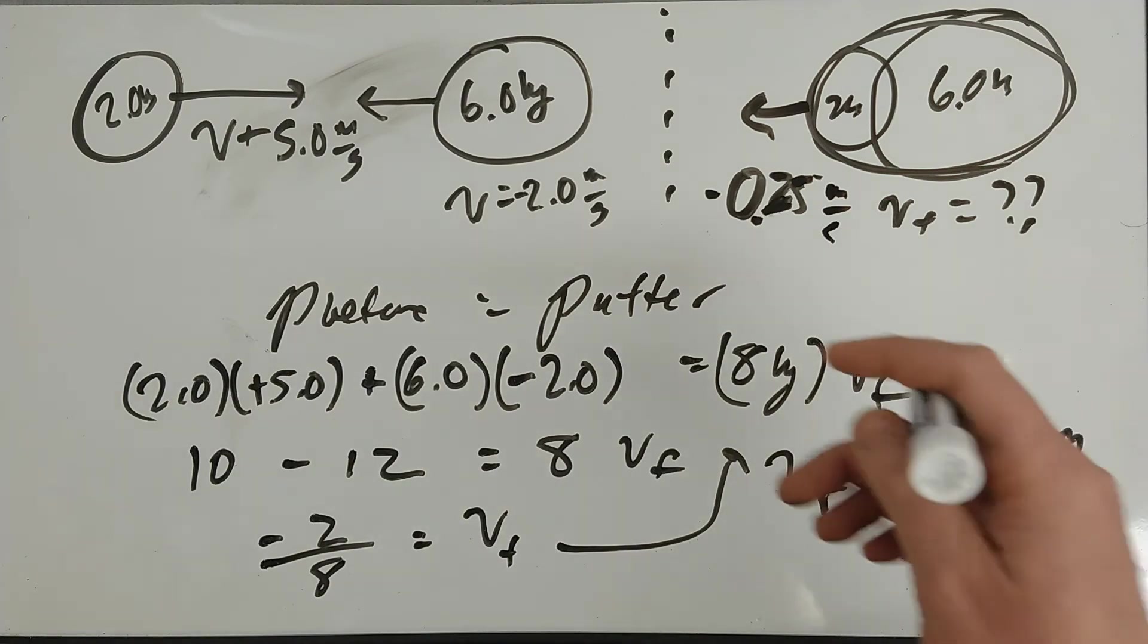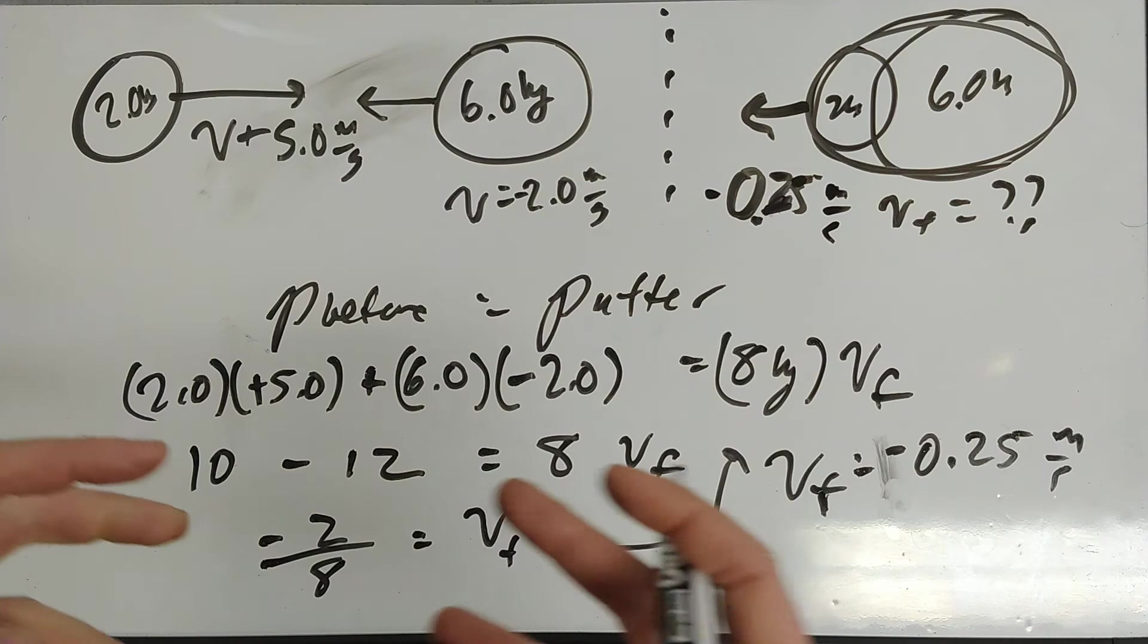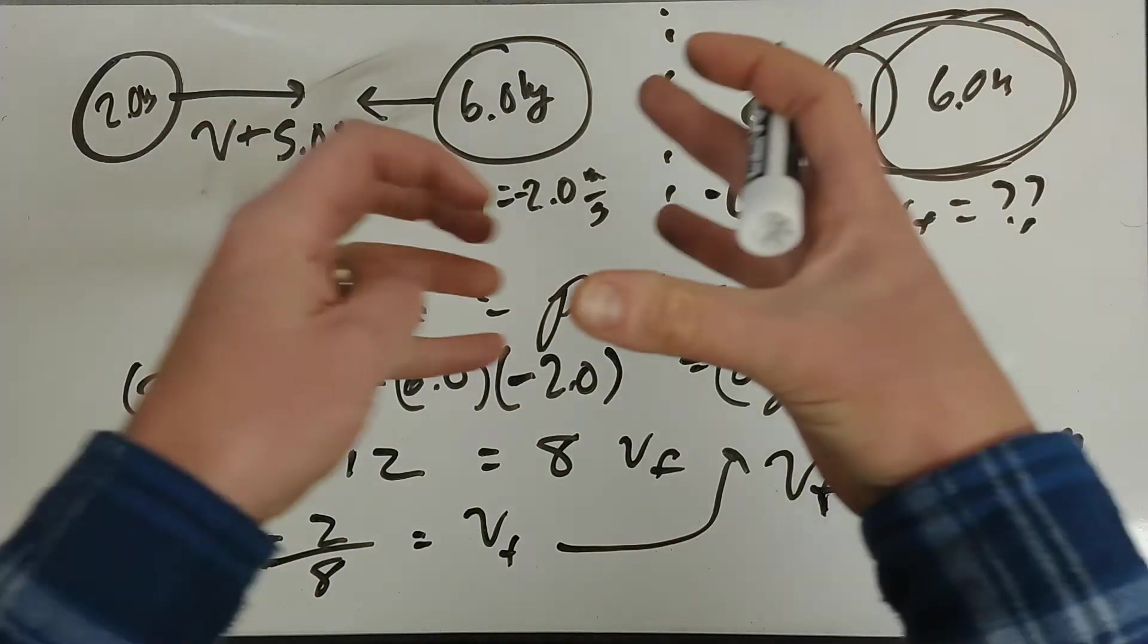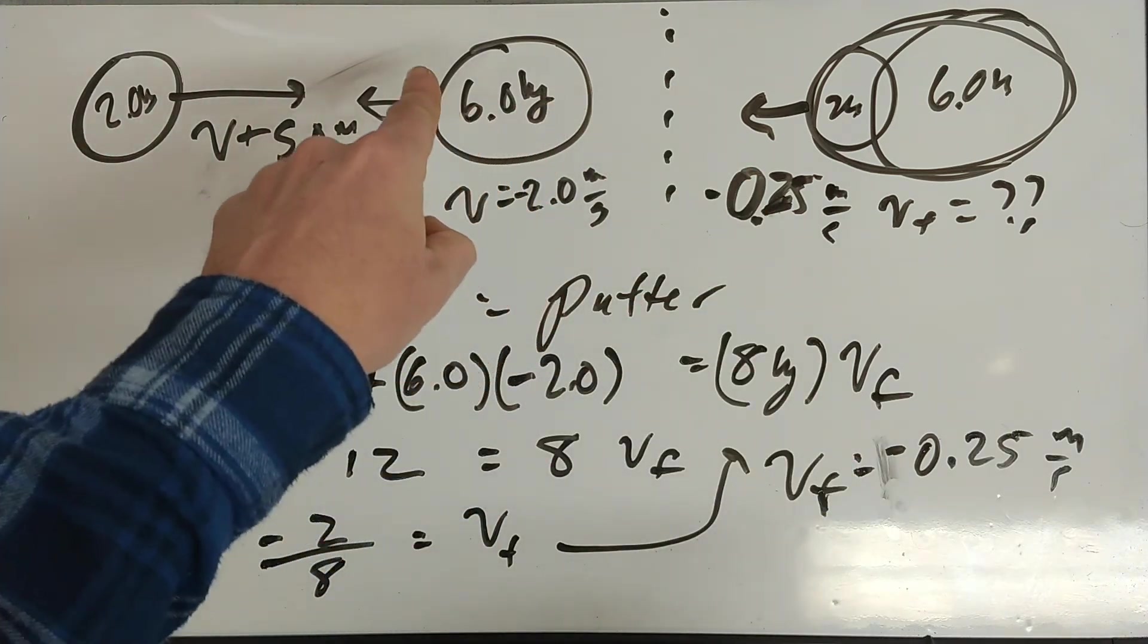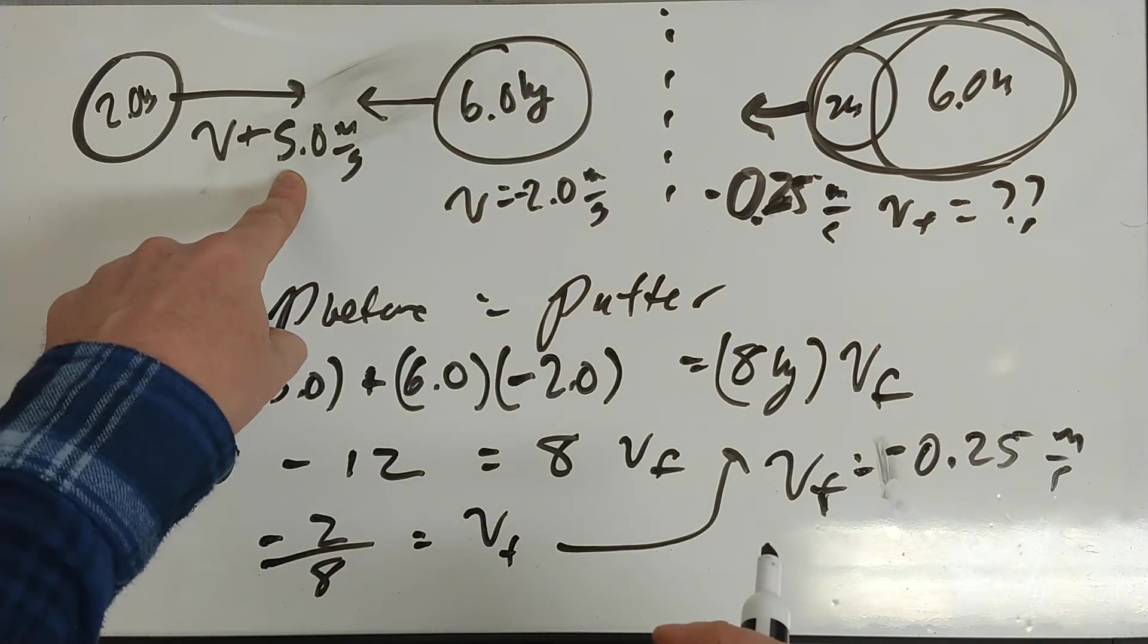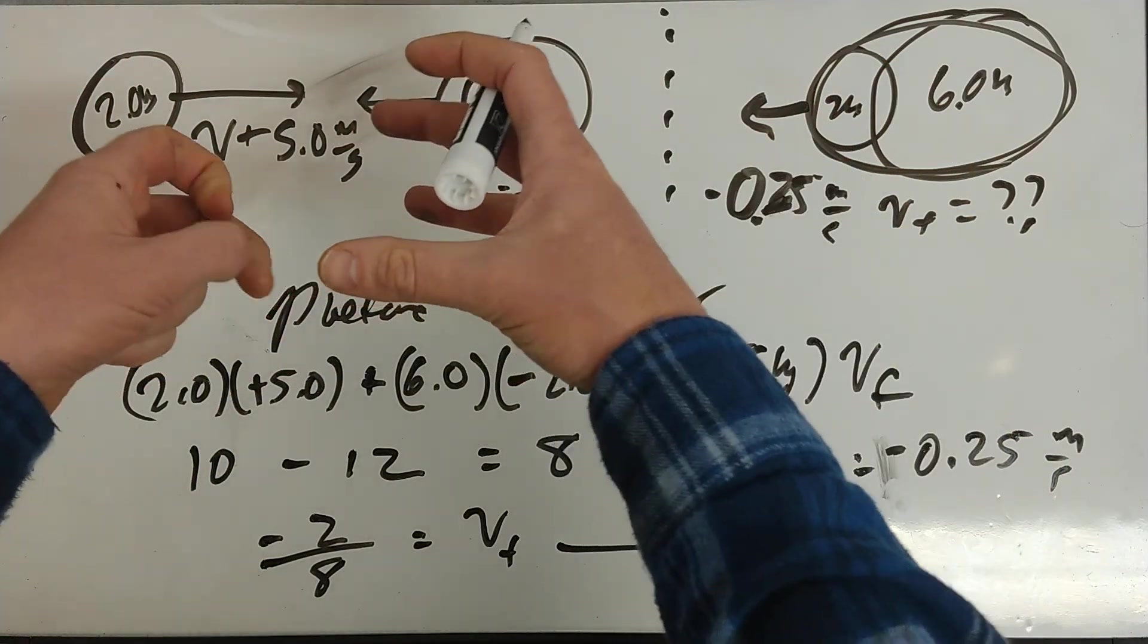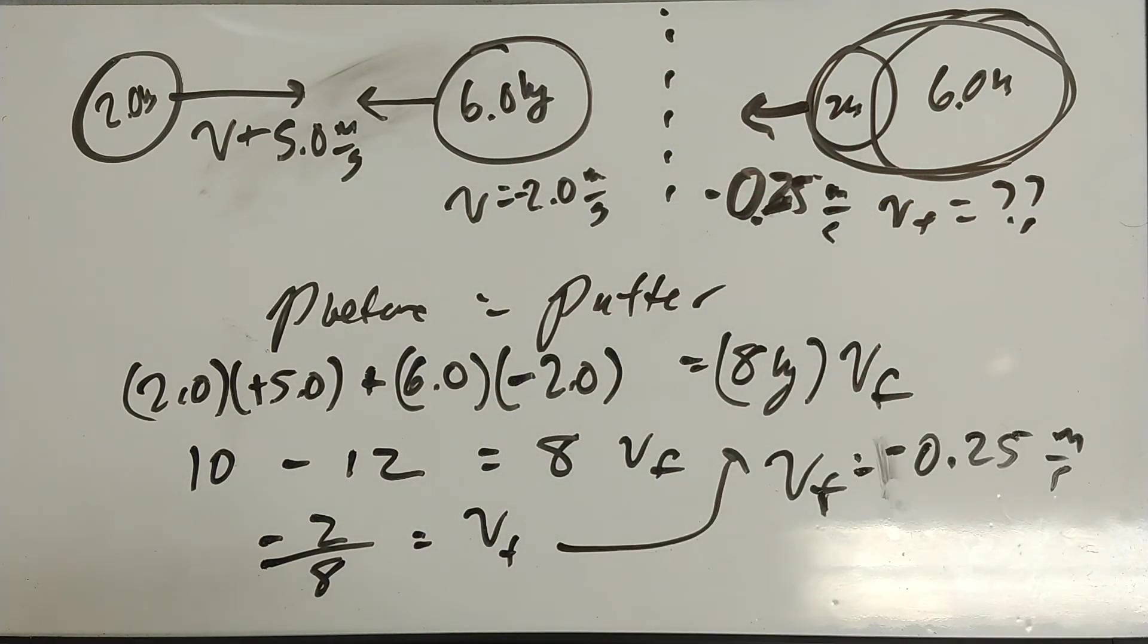There would be a velocity combination in which they would stick together and stop, which is pretty cool. Basically if their incoming momentums are the same—this one's momentum is 12, this one is 10—if I made this one move at six meters per second then when they hit they'd stop. Or if I slowed this one down to 10 divided by six, then it would hit together and stop.